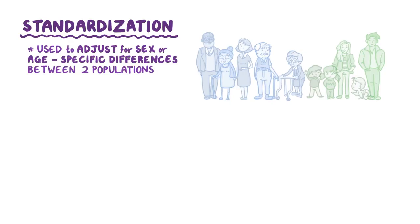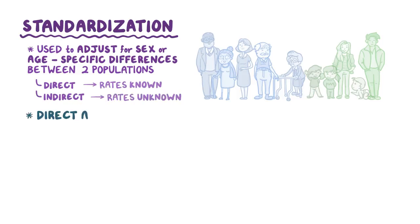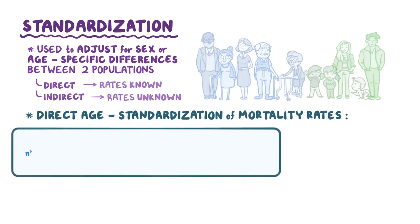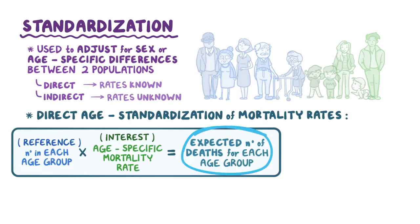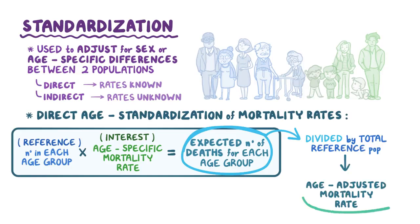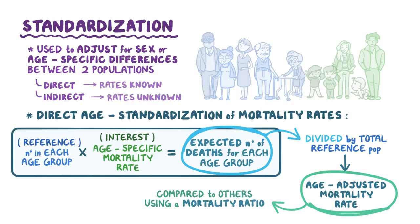As a quick recap: standardization is a method used to adjust for sex-specific or age-specific differences in mortality and morbidity rates between two populations. Standardization can be direct when the rates in each group are known, or indirect when the rates in each group are unknown. In direct age standardization, the number of people in each age group from the reference population is multiplied by the age-specific mortality rates in the population of interest to get expected deaths for each age group. Total expected deaths are then divided by the total reference population to get the age-adjusted mortality rate, which can be compared using a mortality ratio.